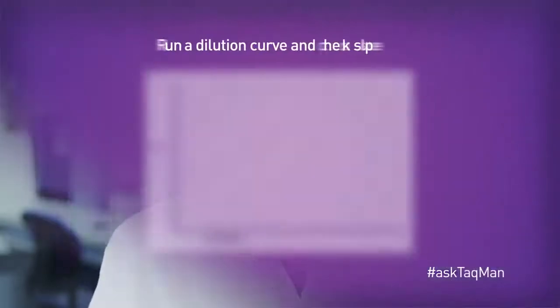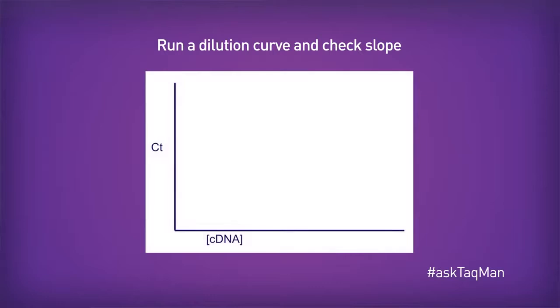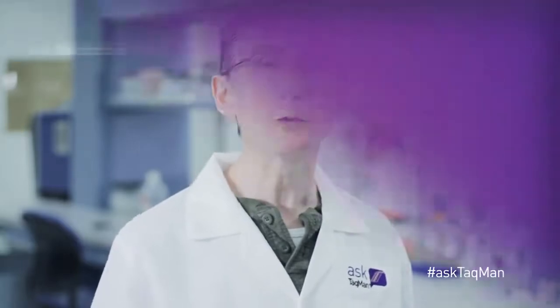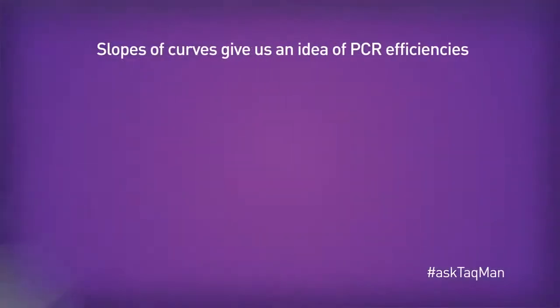Let's start with the basics. To measure the efficiency of an assay, you need to run a template dilution curve in real-time and then look at the resulting slope of that curve. That slope value, assuming you prepared the curve properly, tells you the efficiency.